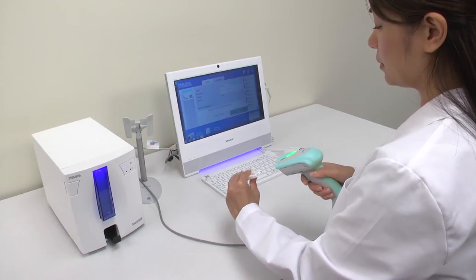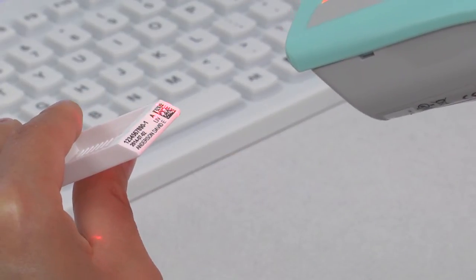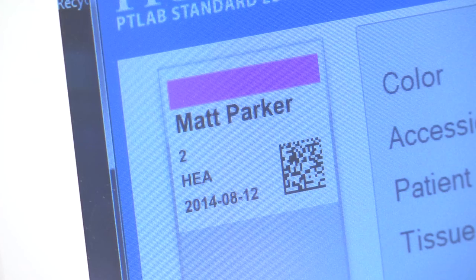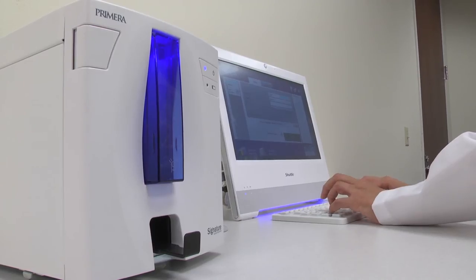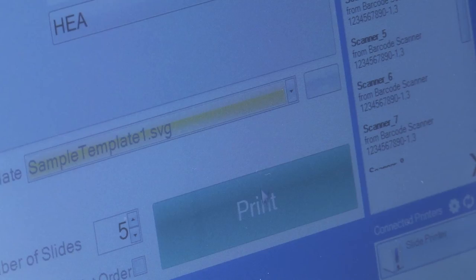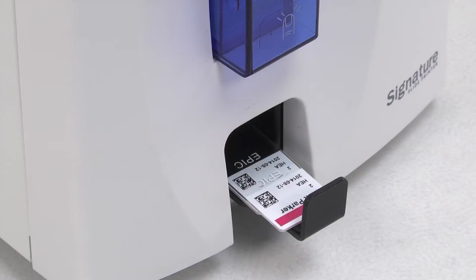Signature slide printer can then scan barcodes from printed cassettes and automatically populate the information into a pre-designed template in Primera's PT lab software. The needed information is then printed in black or color directly onto the slide.